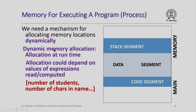What do I mean by dynamic memory allocation? That this allocation is actually going to happen at runtime, and how much memory is going to be allocated could really depend on the values of various expressions that we are reading or computing. For example, the number of students may determine the size of an array that I want to dynamically allocate for storing marks. The number of characters in a name may determine the size of the array to store those characters. So the memory is actually allocated at runtime and how much memory is allocated could depend on the values of various variables or expressions at the time of allocation.